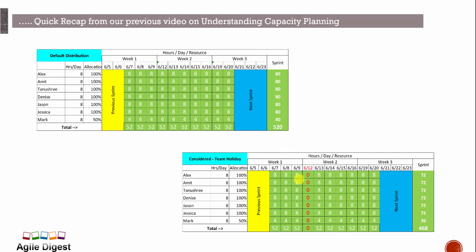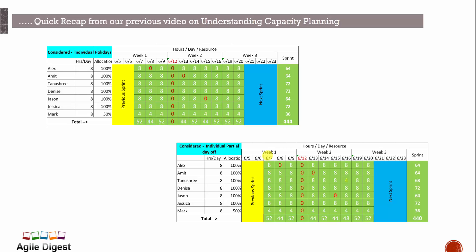Now assuming 12th of June is a company holiday — a team holiday — everyone will not be working, so we calculate that factor into capacity. The next factor is individual holidays or planned vacations: Alex is on vacation on the 8th, Amit on the 13th, and Jason on the 15th. Also, Tanushri is taking a half day off on the 16th of June, working four hours instead of eight.